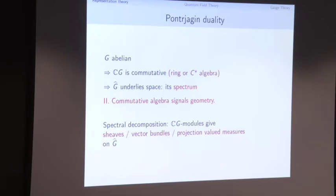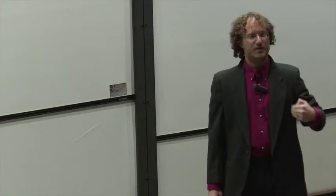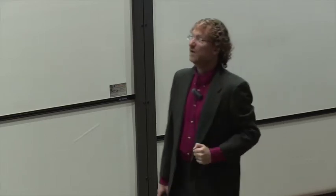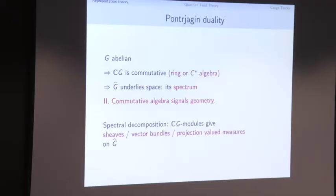When the group is abelian, the algebra of all operators generated by G is a big, nice commutative algebra. Depending on the setting, you might think of this as a discrete ring or as a C*-algebra. Our second theme was: when you see a commutative algebra, you should think there's geometry. So we have this commutative group algebra, and we're going to find a space — this will be the unitary dual, now not just as a set but as a topological space, the spectrum of the ring.